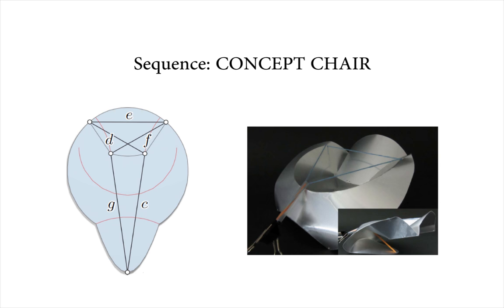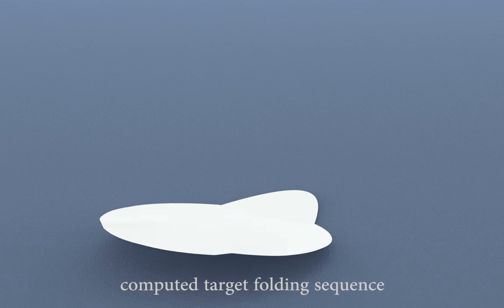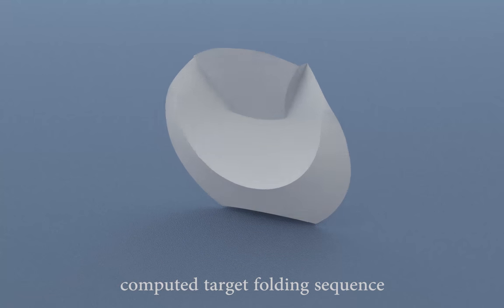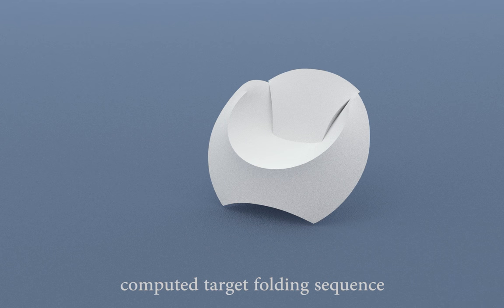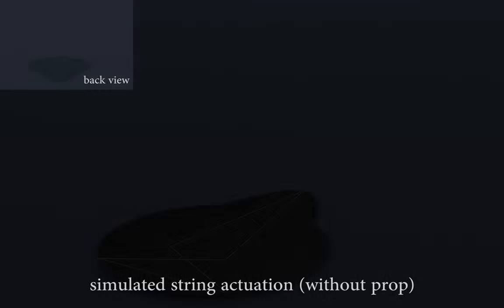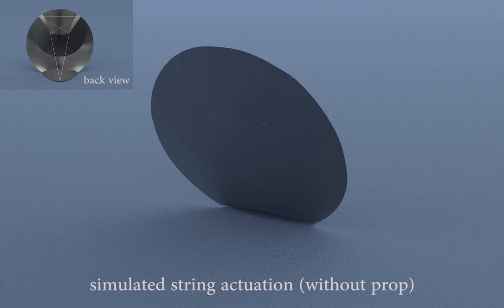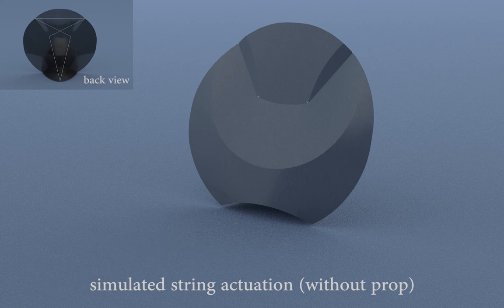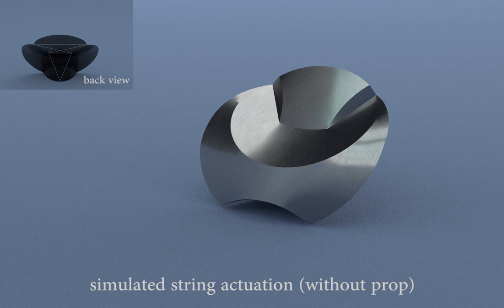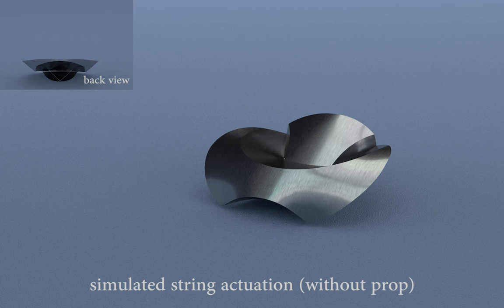The effect of any single string on the deformation of the developable surface can be studied independently. Such deformations can be linearly combined to yield a local estimate of how the surface will evolve in time. The non-linear deformation due to string contraction can be re-linearized at each point along the trajectory and solve for a consistent network of strings across time to realize the desired curved folding.